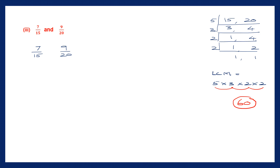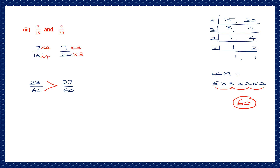We'll use 60 as the common denominator for both fractions. For the first fraction 7 by 15: 15 into 4 is 60, so multiply 7 also by 4 — 7 fours are 28. For the second fraction 9 by 20: 20 into 3 is 60, so multiply 9 also by 3 — 9 threes are 27. The denominators are now the same; looking at the numerators 28 and 27 — 28 is greater. So 7 by 15 is greater than 9 by 20.